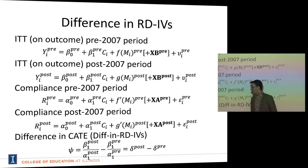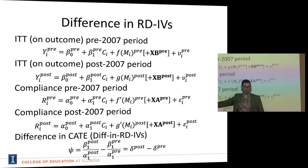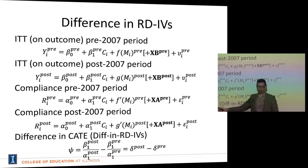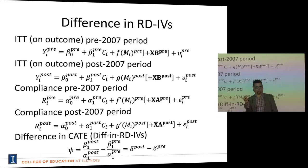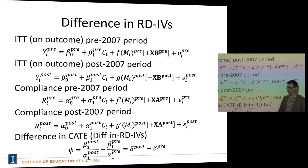Putting it all together, we have a difference in complier average treatment effects — or a difference in RDIVs. Psi is the policy change effect of reclassification: the intent-to-treat effect in the post-period divided by compliance in the post-period gives the average treatment effect in the post-period, and we subtract off the effect from the pre-period.